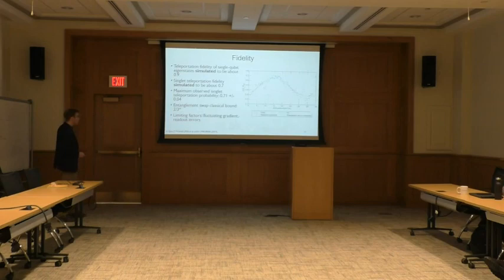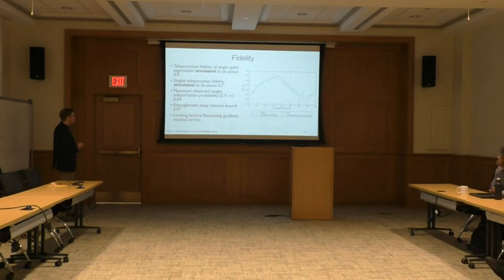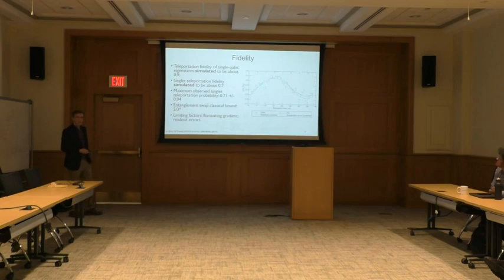Regarding fidelity: we simulate the fidelity of the entanglement swapping operation to be about 0.7. Based on our data, we measure a maximum entanglement swapping probability of 0.71 ± 0.04. The relevant classical bound for this experiment is two-thirds. You can see that we expect we're beating this bound. The limiting factors in this operation are the magnetic gradient as well as readout errors.